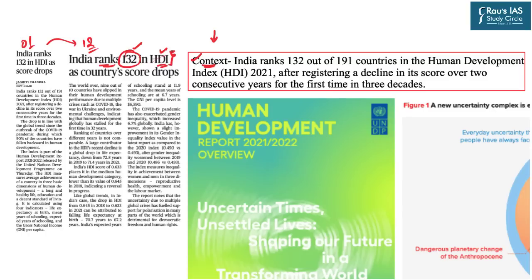Today we are not going to discuss only the HDI but the entire Human Development Report 2021–2022 published by UNDP. In this report, one index is related to the Human Development Index; however, there are several other indexes as well, so we will go through all those important indexes which are relevant from our examination's perspective.